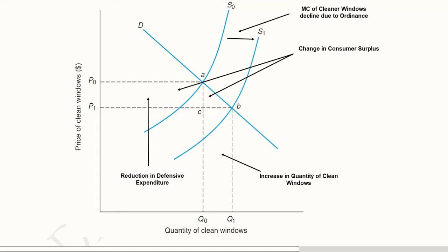And you can see that the expansion has given rise to a greater number of clean windows. As compared to the previous level, which was Q0, now we have Q1. And due to this change in equilibrium from point A to point B, the price is also changed. The price is now less because we have to spend less on cleaning the windows because of this ordinance that has improved the situation by providing a lower cost of cleaning the windows as the windows are already cleaner as compared to before.